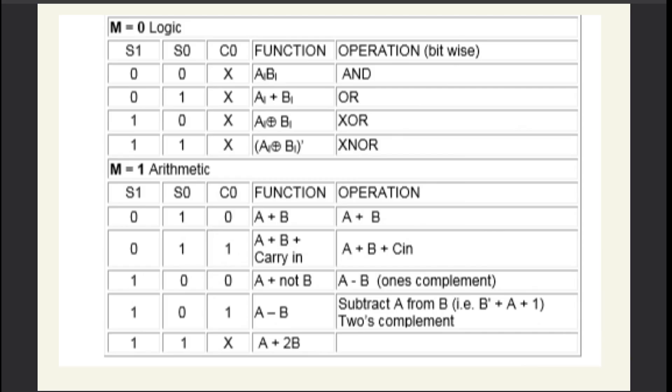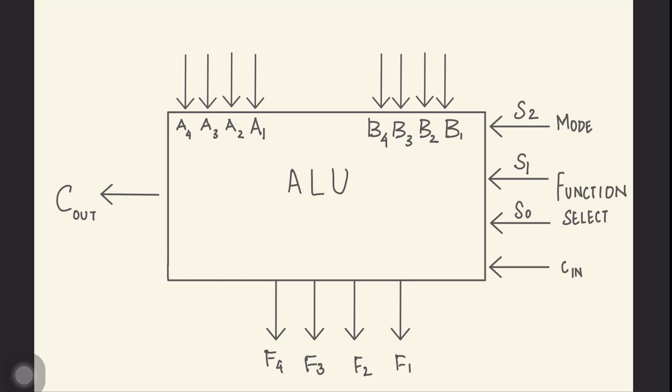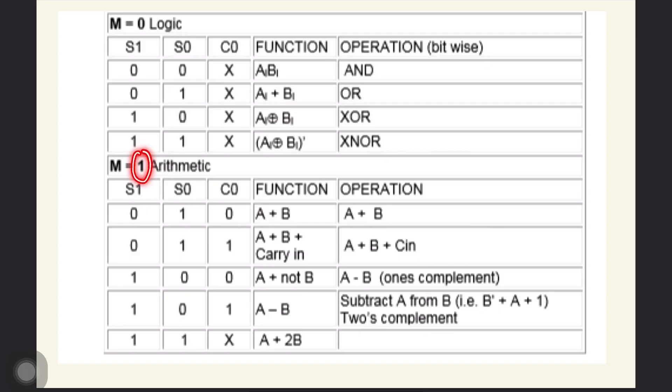Every ALU will have a table that specifies a combination of input bits that will perform a particular operation. For example, according to this, if I want to perform addition, then I will input 1 as the input bit for mode select (that is S2), and 0 as the input bit for S1, and 1 as the input bit for S0 to select the particular addition operation.